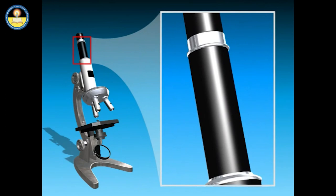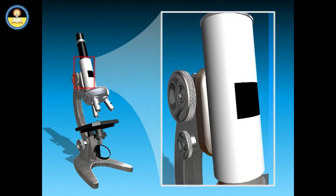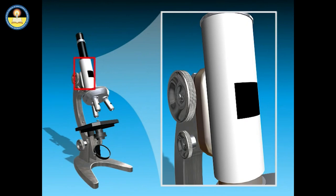The eyepiece lens is fixed in a tube. There is another tube which connects the eyepiece to the objective lens holder, known as the body tube. The body tube separates the objective and the eyepiece and assures continuous alignment of both the lenses.